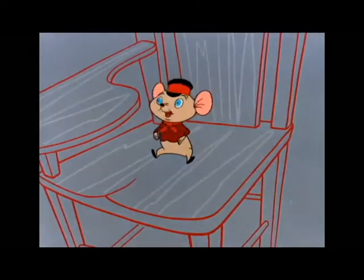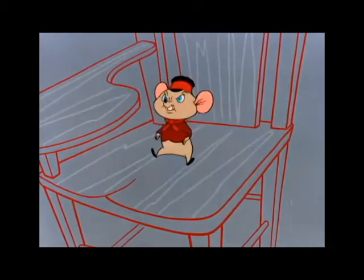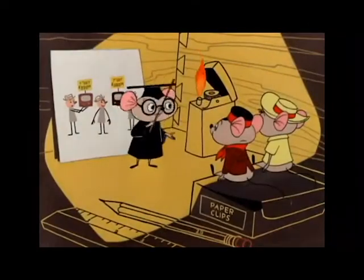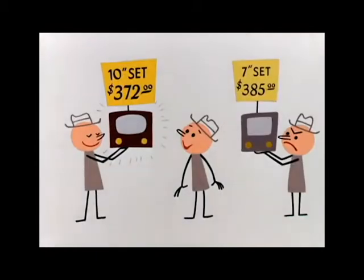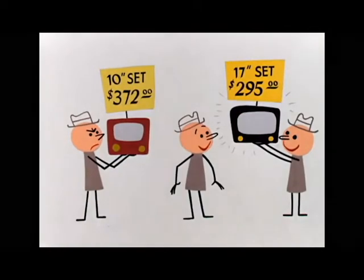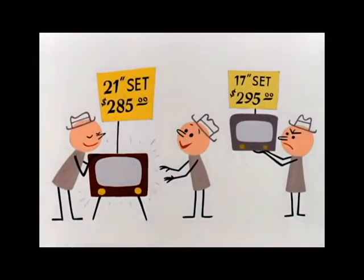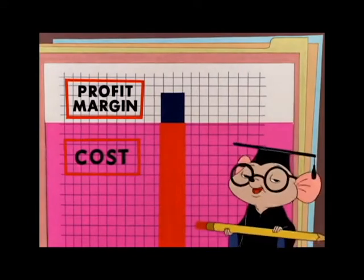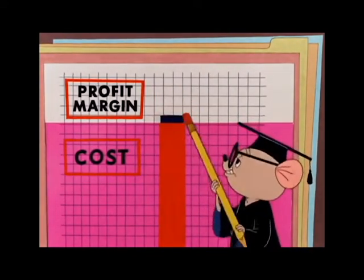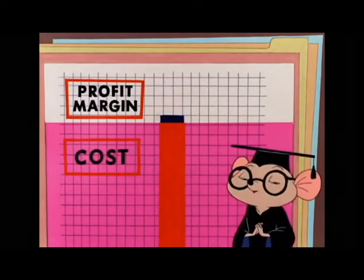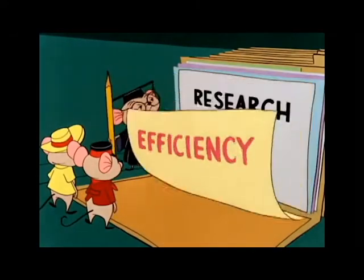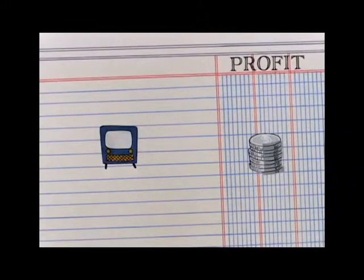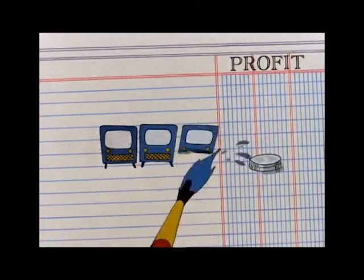Does that straighten you out? Oh yeah, sure, sure — that straightens me out just like a pretzel. Competition makes the businessman try to sell his product for less than his rivals. To attract customers, a manufacturer must reduce his profit margin on each sale, but he can only go so low. He must then lower his costs. By efficiency and research, the manufacturer reduces costs and improves the product. He doesn't make as much on each item, but he sells more items.